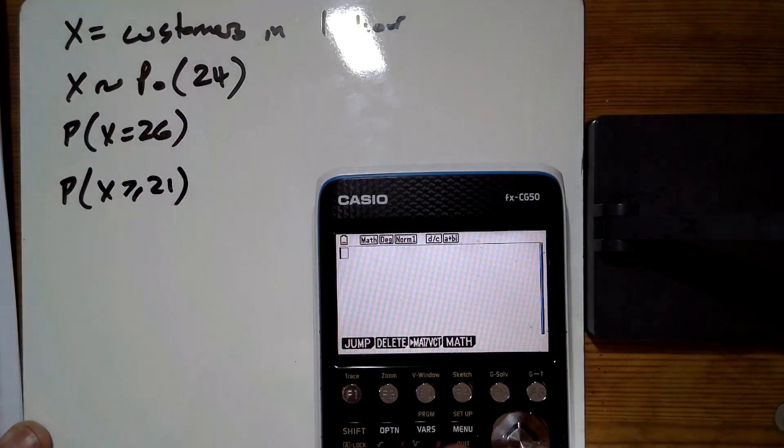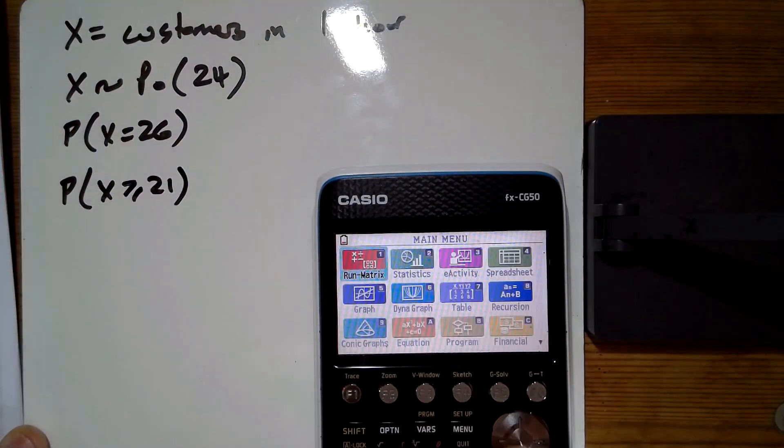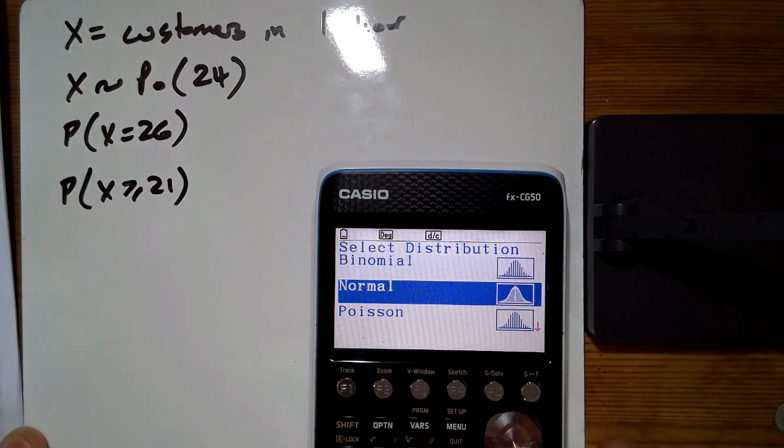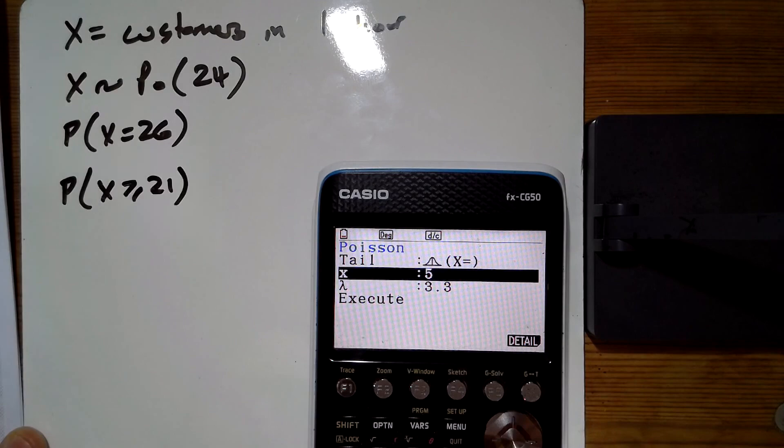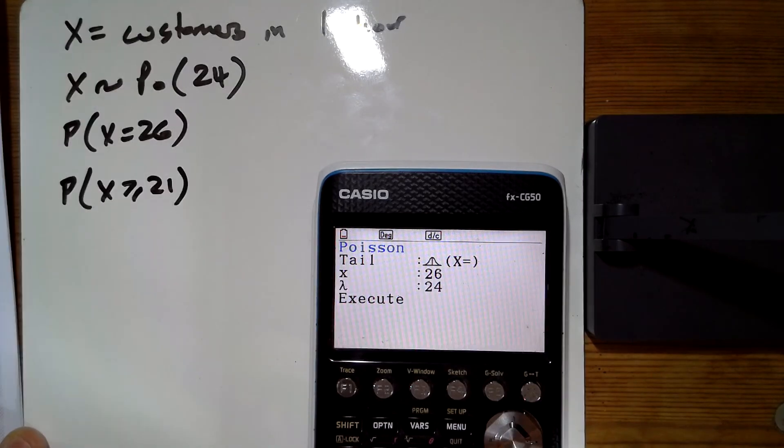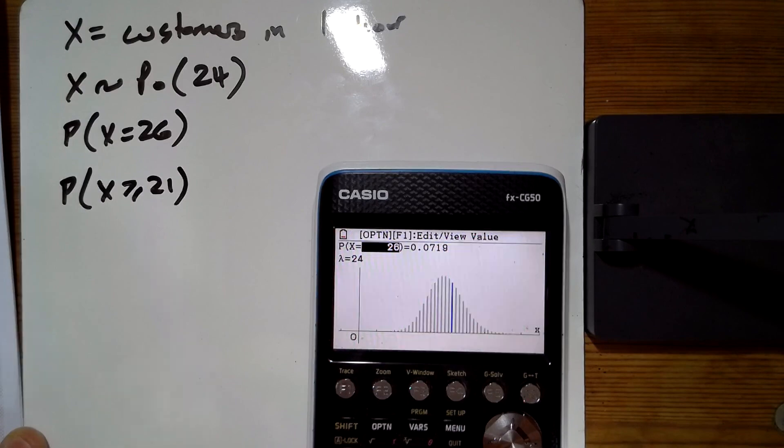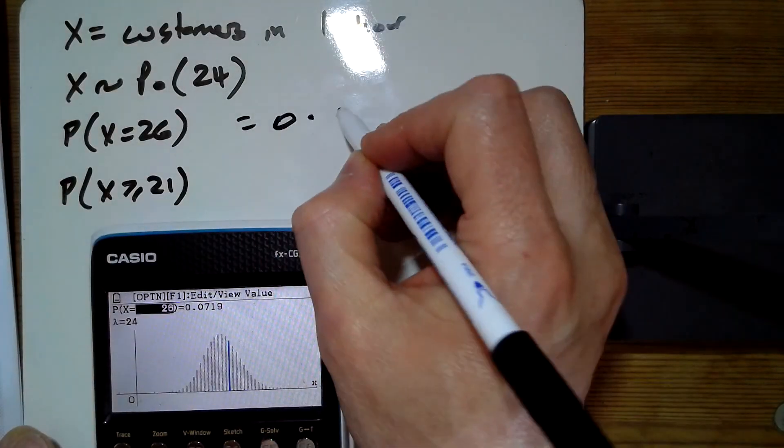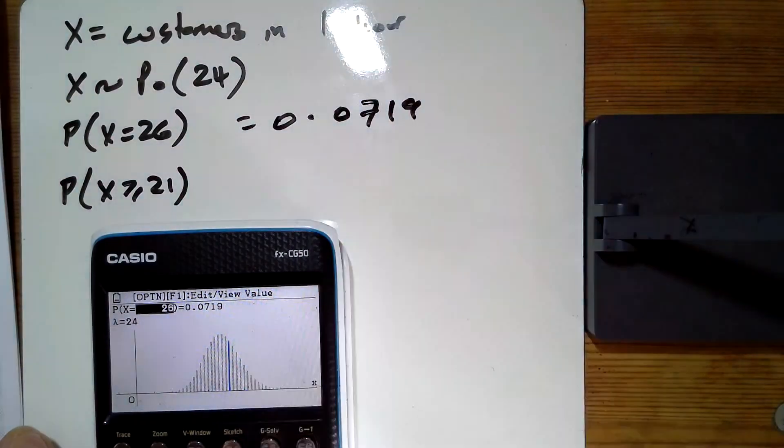We'll go into the distributions menu, to Poisson. For Poisson, we want 26 with a mean of 24. So that first one is 0.0719.